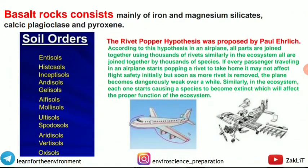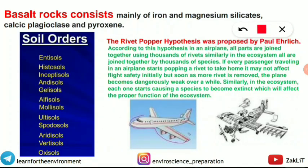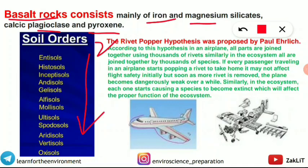Basalt rock consists of iron and magnesium silicates, calcic plagioclase, and pyroxene — mostly iron and magnesium composition. A soil order question was also asked. The correct order of soil taxonomy is: Entisol → Histosol → Inceptisol → Andisol → Gelisol → Alfisol → Mollisol → Ultisol → Spodosol → Aridisol → Vertisol → Oxisol.